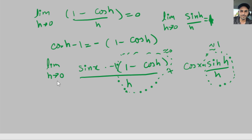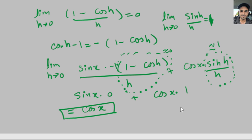So we get the limit as h goes to 0: this is sine of x times 0 plus cosine of x times 1. So this equals just cosine of x. So the derivative of the sine function, d over dx of sine of x, equals cosine of x. This is the final result found using the definition of derivative.